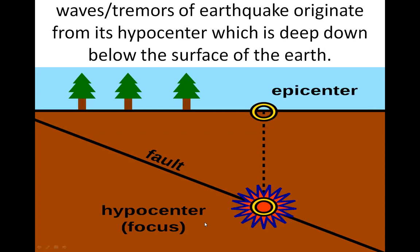Waves or tremors of an earthquake originate from its hypocenter, which is deep down below the surface of the earth. Such sudden shaking or trembling is known as an earthquake. Earthquakes are created from the epicenter during the process of an earthquake, and can be felt from the epicenter. Earthquakes occur due to internal disturbance of the earth.